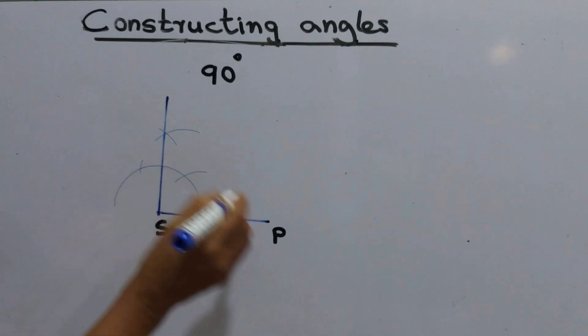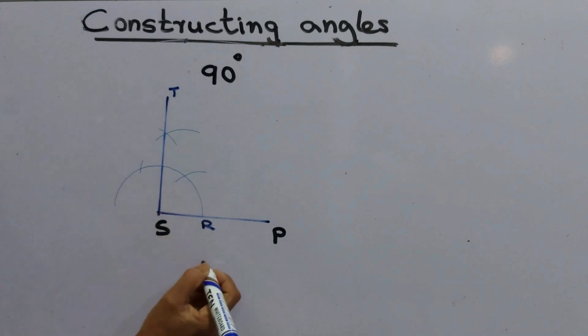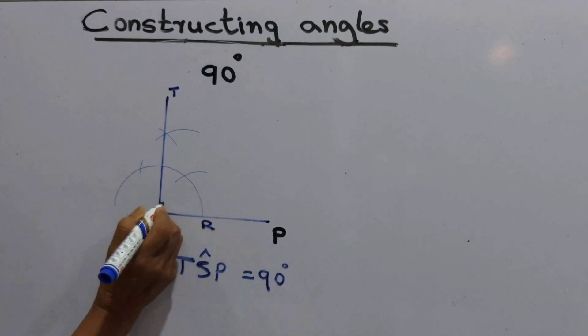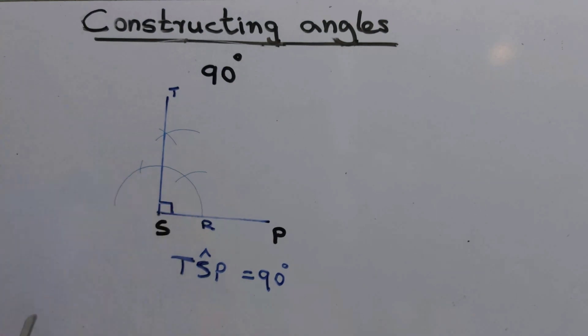We'll name it as T. The angle TSP is 90 degrees, which is a right angle.